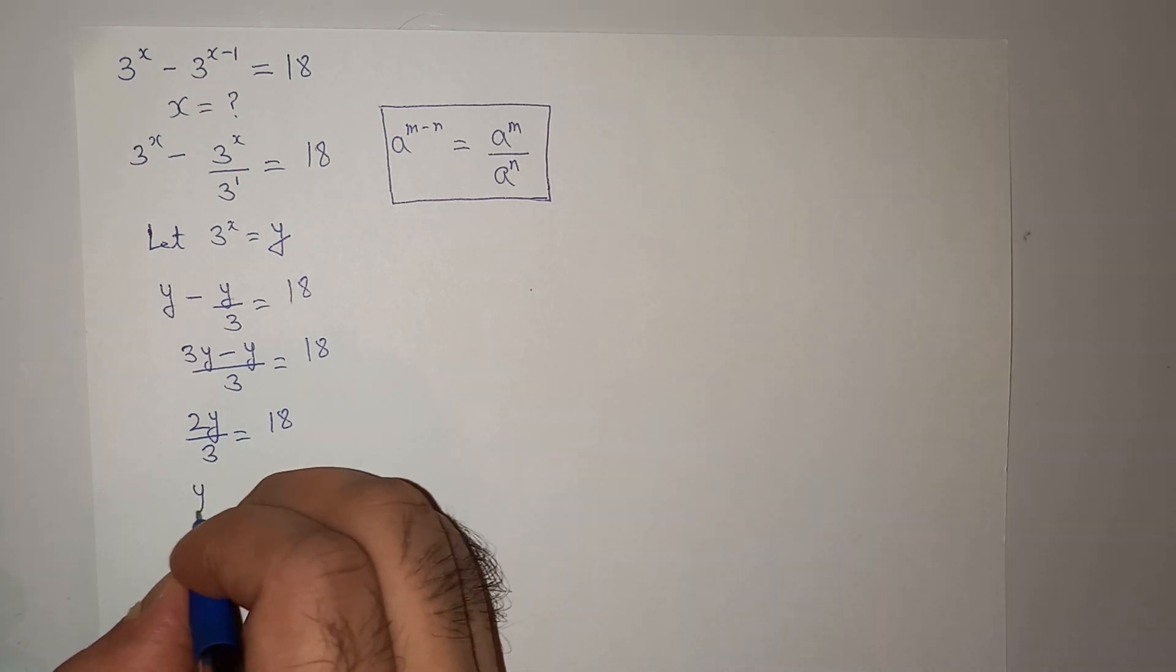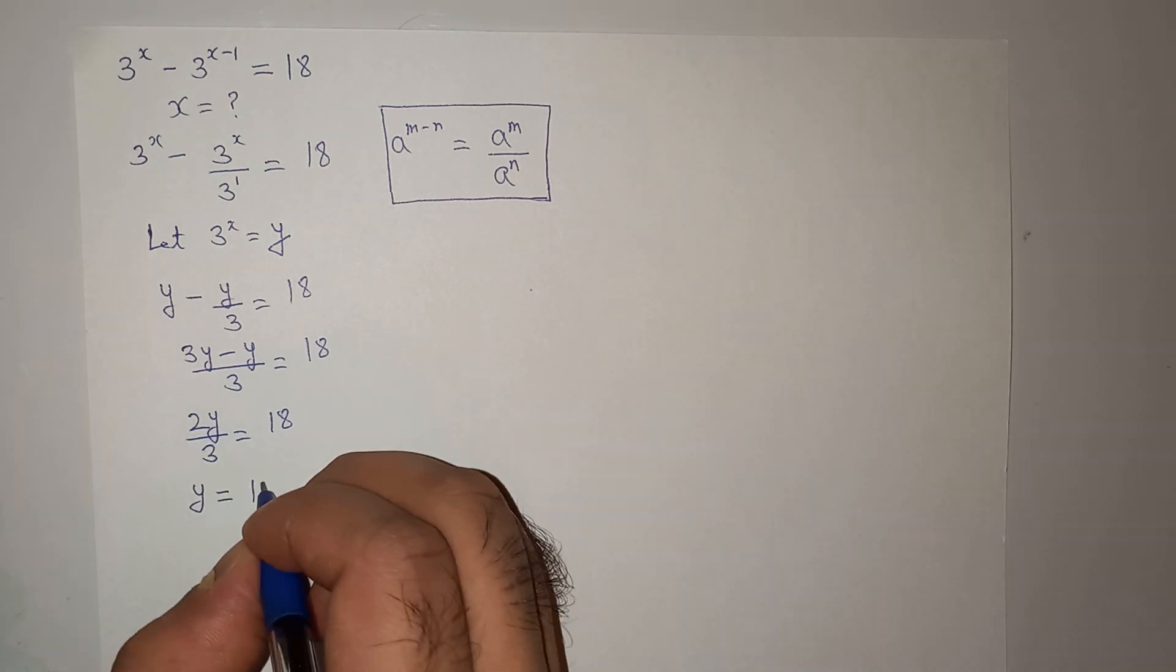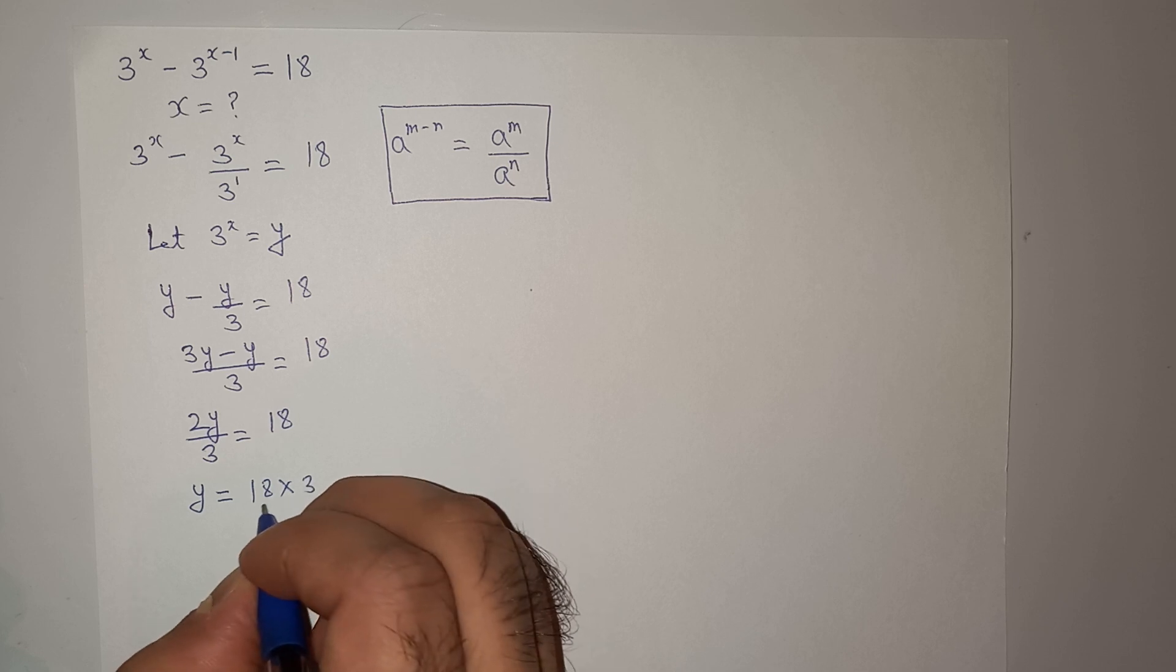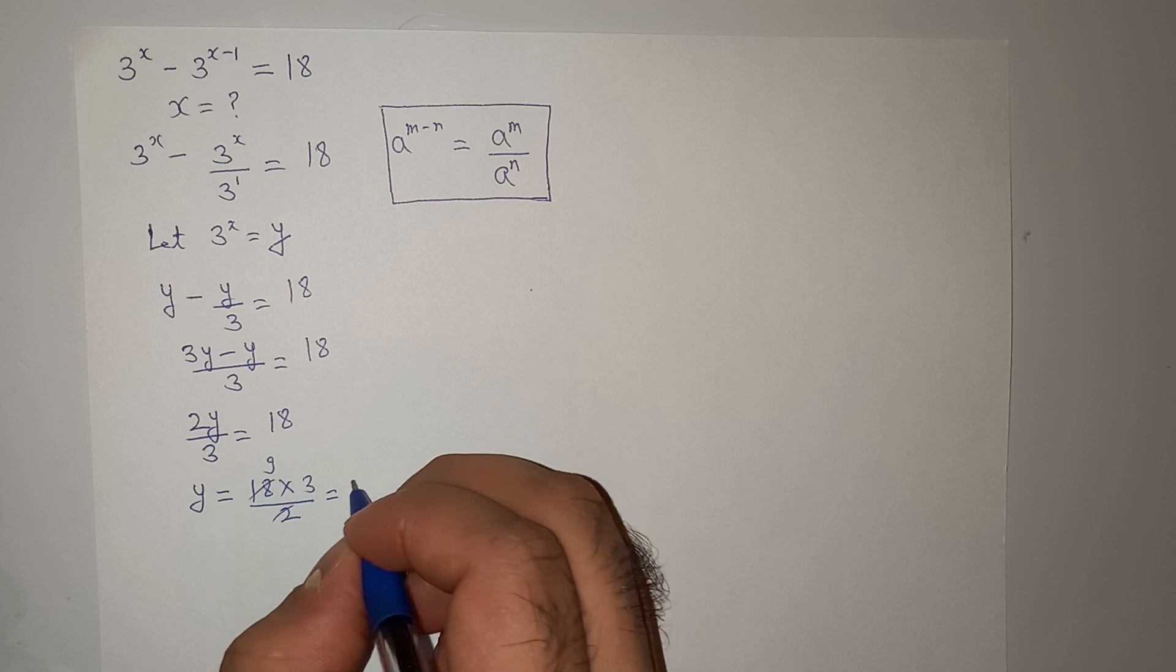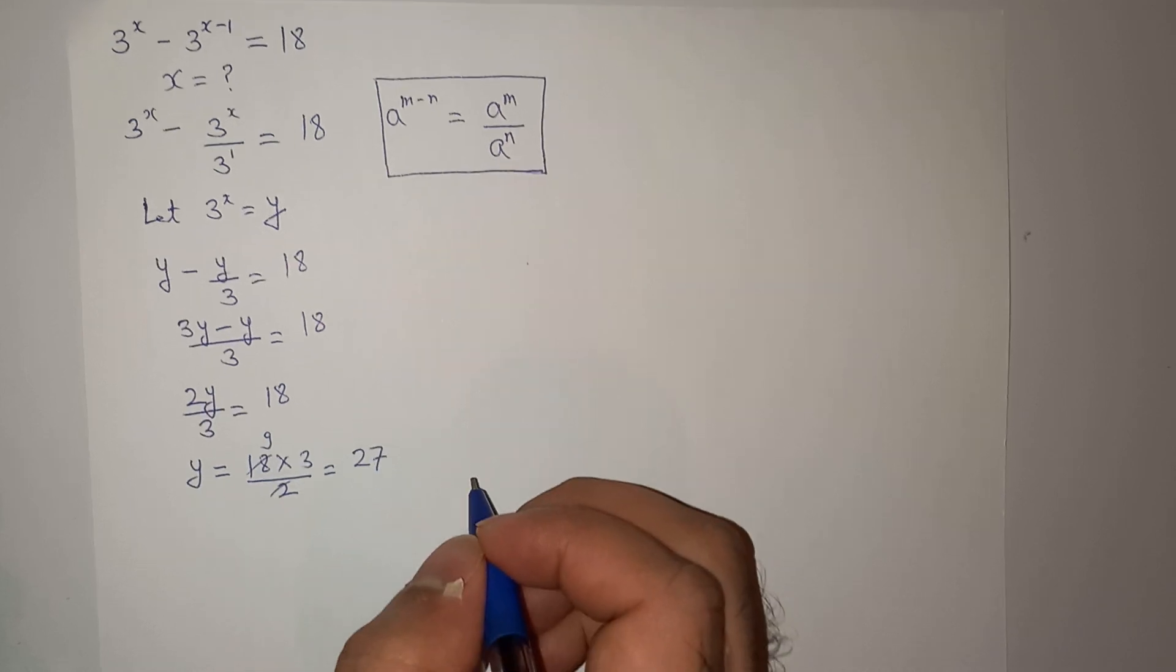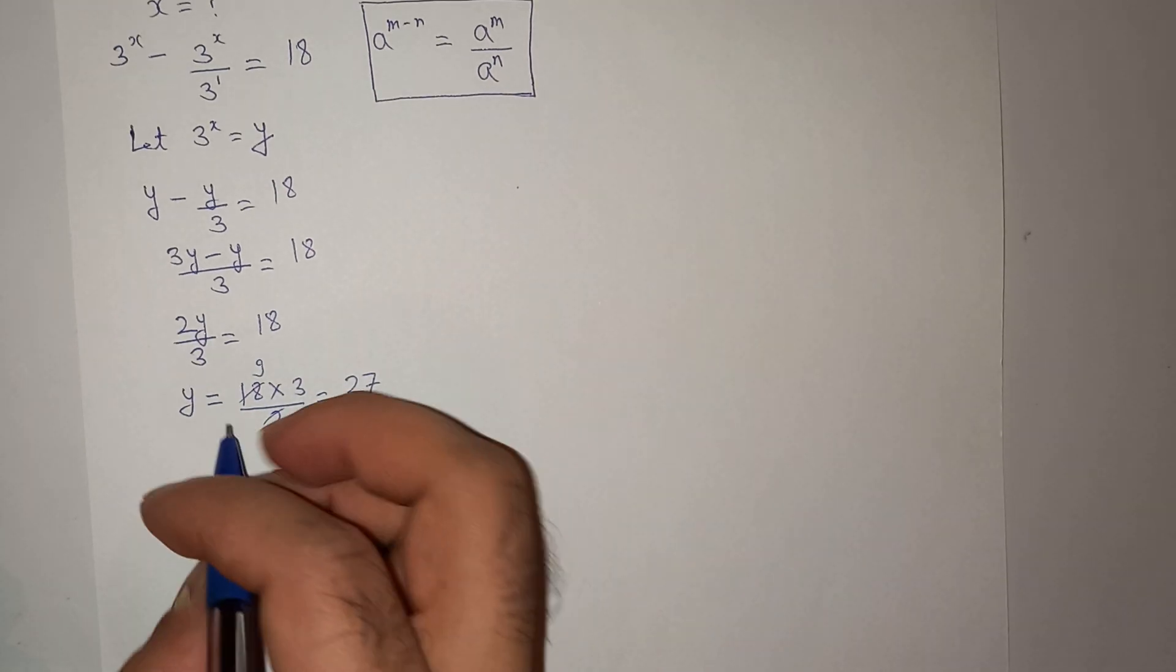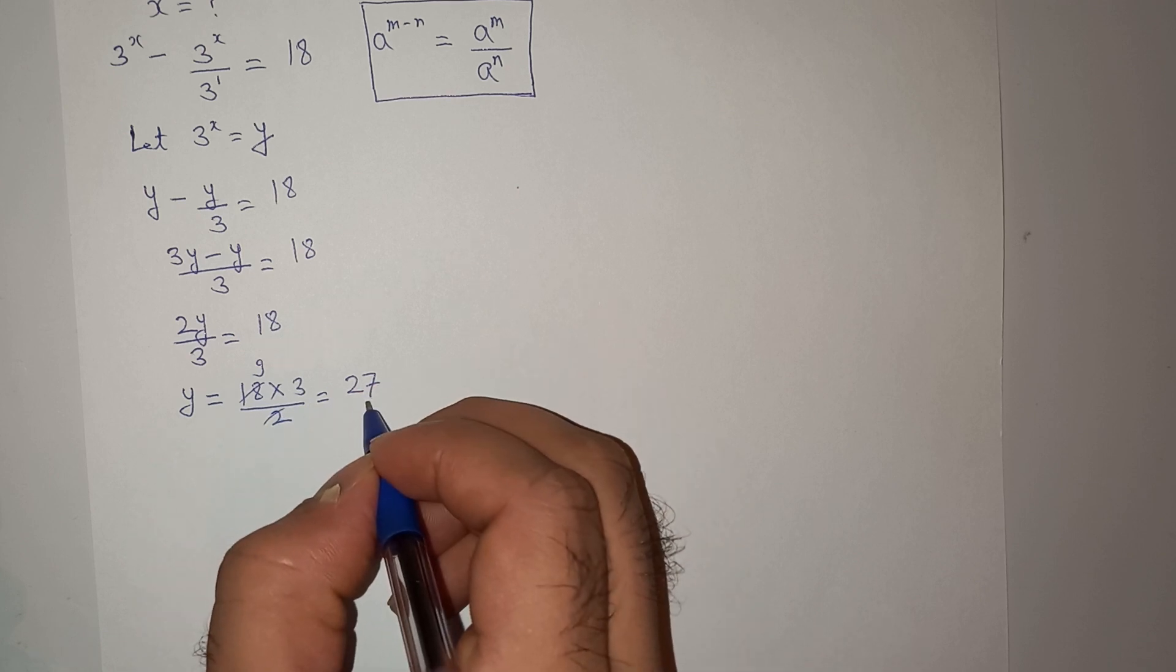So this is going to give us the value of y as 18 multiplied by 3 divided by 2. So this is 9, 9 multiplied by 3 is 27. Right? So the value of y is 27.